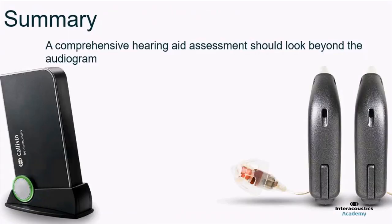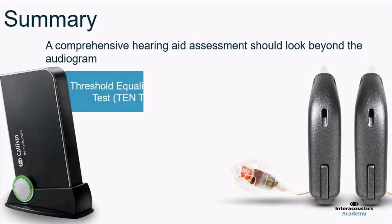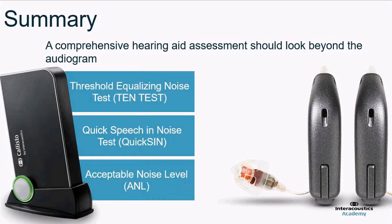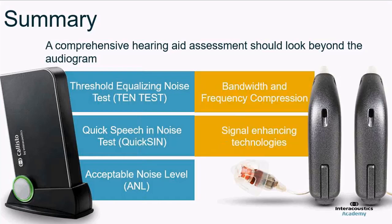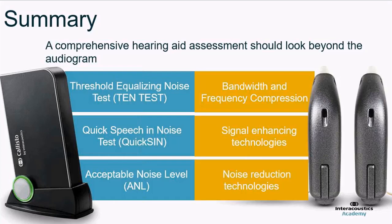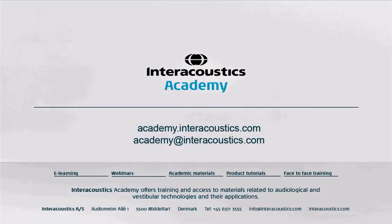That really comes to the end of the presentation. A comprehensive hearing aid assessment should look beyond the audiogram, and hopefully you've seen today that there's good reason to do that. The three tests — the threshold equalising noise test, the QuickSIN speech-in-noise test, and the acceptable noise level test — can help us identify bandwidth, frequency compression, signal enhancing technologies, and noise reduction technologies. If you have any questions, feel free to send an email to academy@interacoustics.com for a private conversation about what we've learned today.